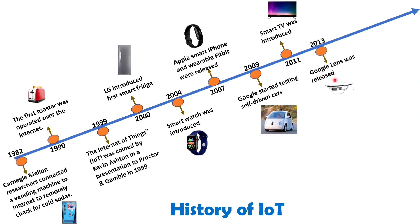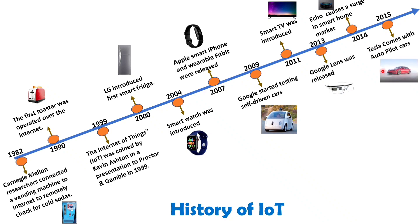In 2013, Google Glass was released, enabling users to access relevant information by pointing at objects. In 2014, the smart home market witnessed the rise of widely popular devices like Amazon Alexa and Siri — voice assistants that take commands from users to operate home devices. Tesla introduced autopilot cars in 2015, making another significant advancement in IoT. Since then, IoT has made remarkable progress in various domains including work from home, retail, healthcare, automotive, and many more, all aimed at serving humanity.